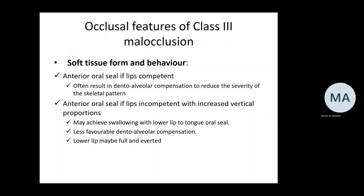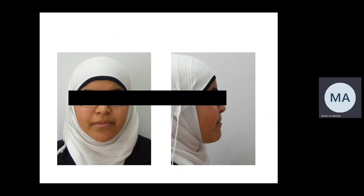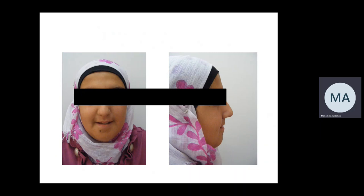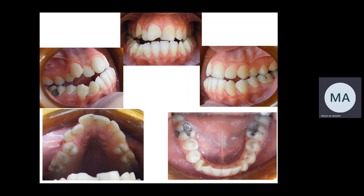Patients with class three malocclusion and increased vertical proportions usually have averted and full lower lips. A patient with mild to moderate class three skeletal pattern but favorable soft tissues and competent lips is expected to show less severe class three dental features because of good dental alveolar compensation. On the other hand, a patient with increased lower facial height and incompetent lips — unfavorable soft tissues — is expected to show more severe dental features with minimal dental alveolar compensation.